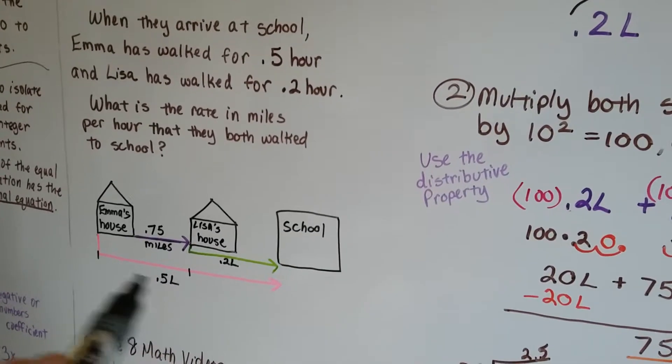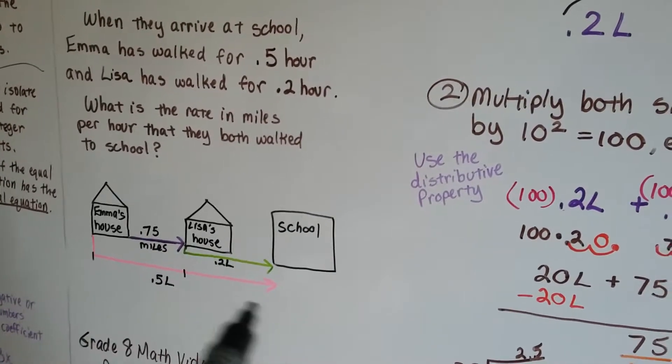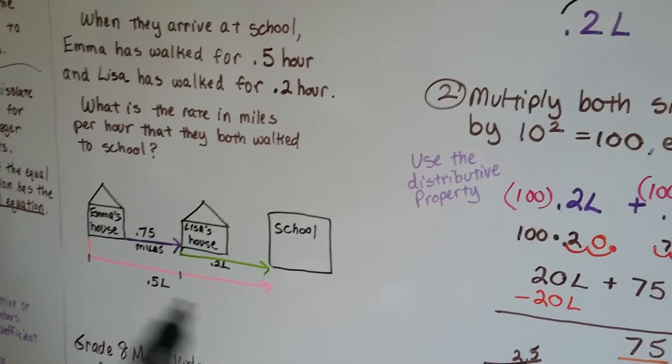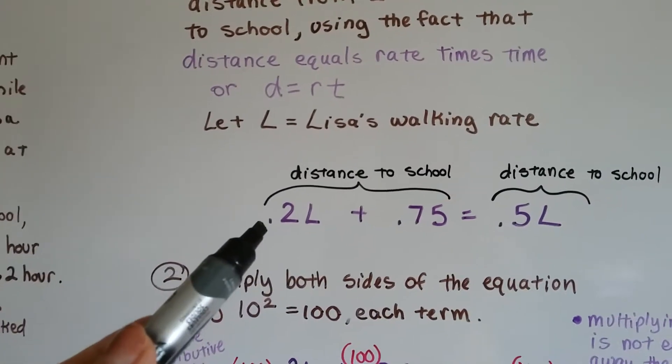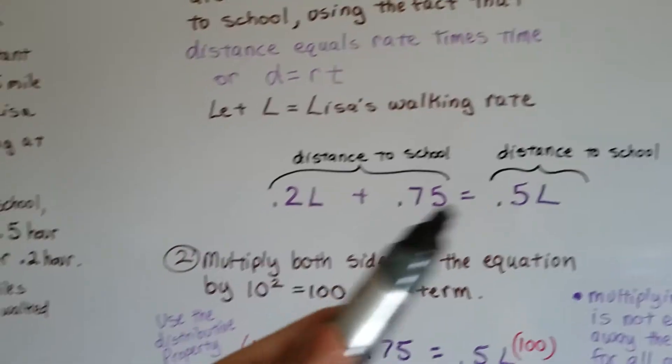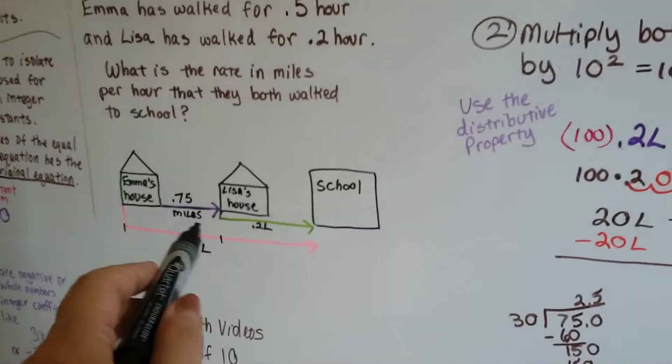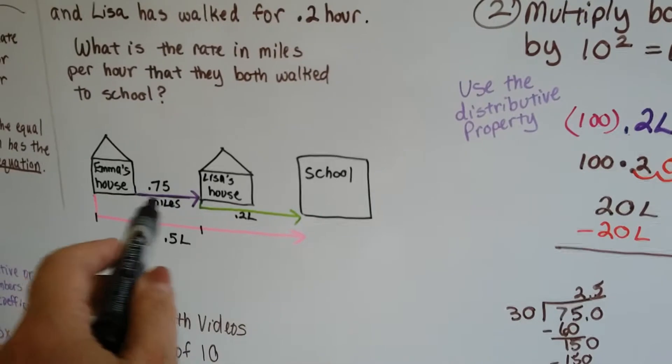So Lisa's walking rate is .5 an hour. That's half an hour. And the distance to school is going to be .2L plus .75. Here's the .2L and here's the .75.